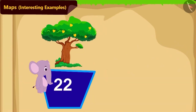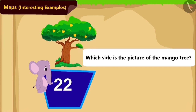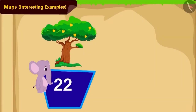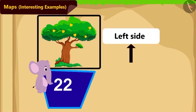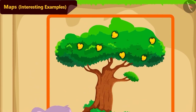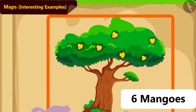Now, can you tell on which side of tile number twenty-two is the picture of a mango tree? Yes, the picture of a mango tree is to the left of tile number twenty-two. And how many mangoes are painted on top of that mango tree? Absolutely right — six mangoes.